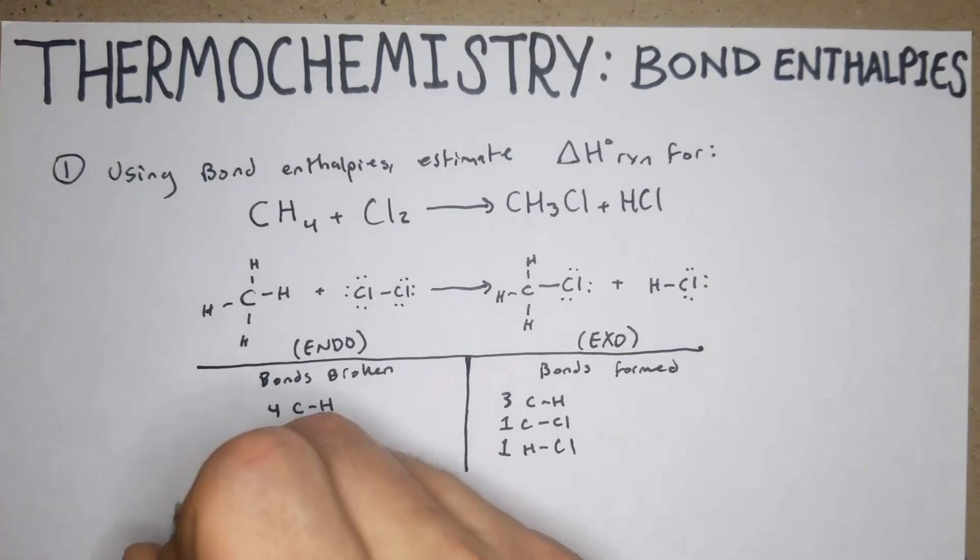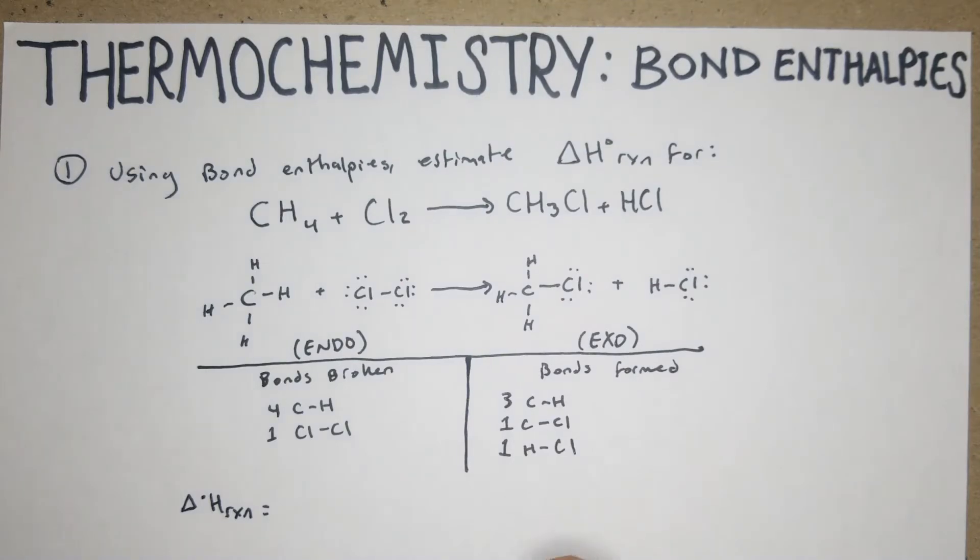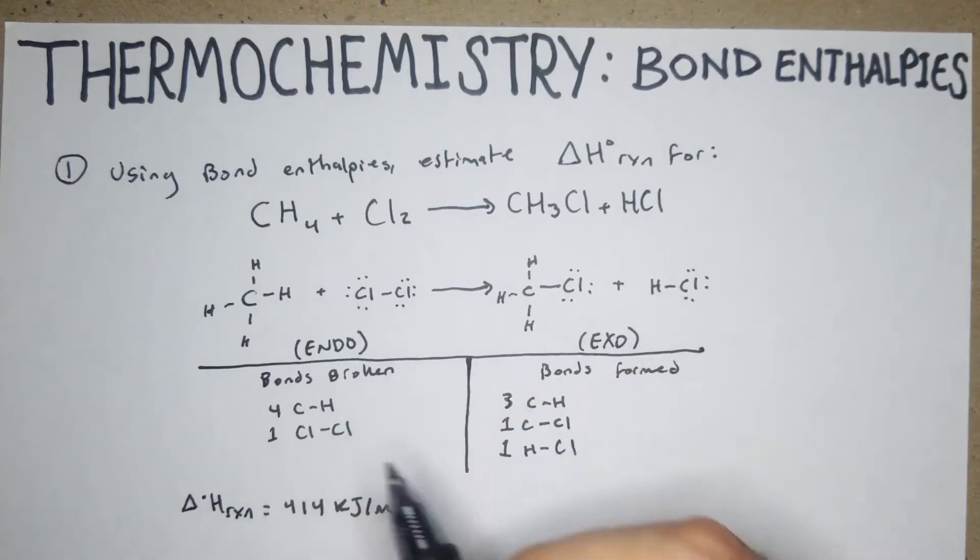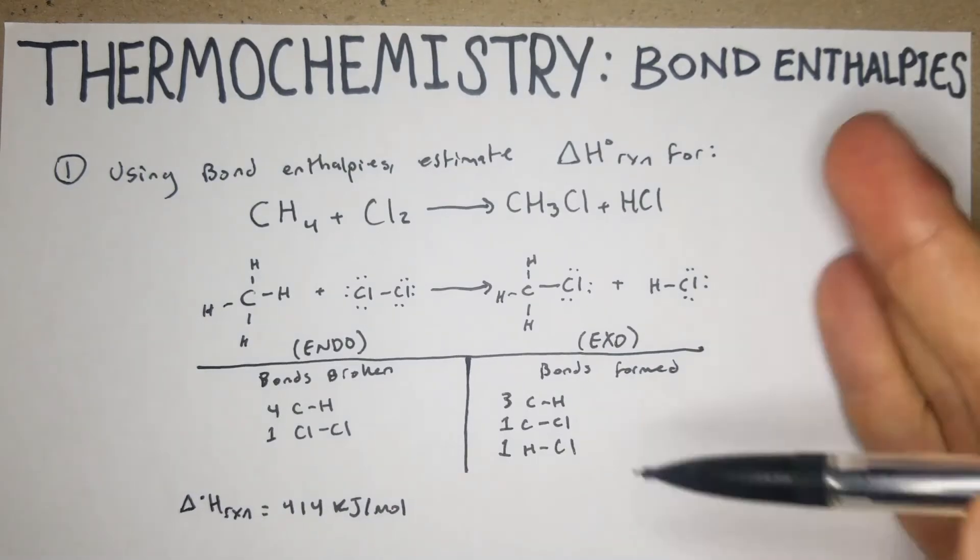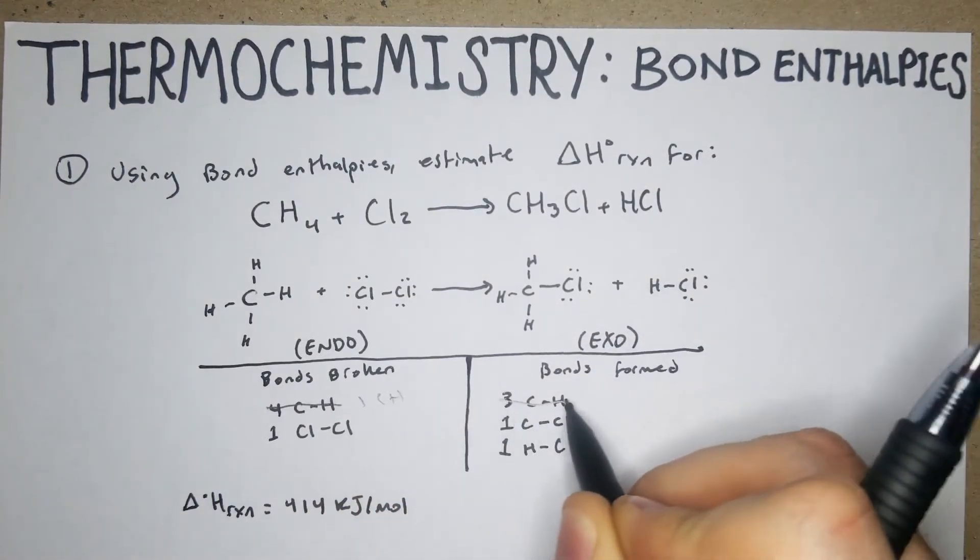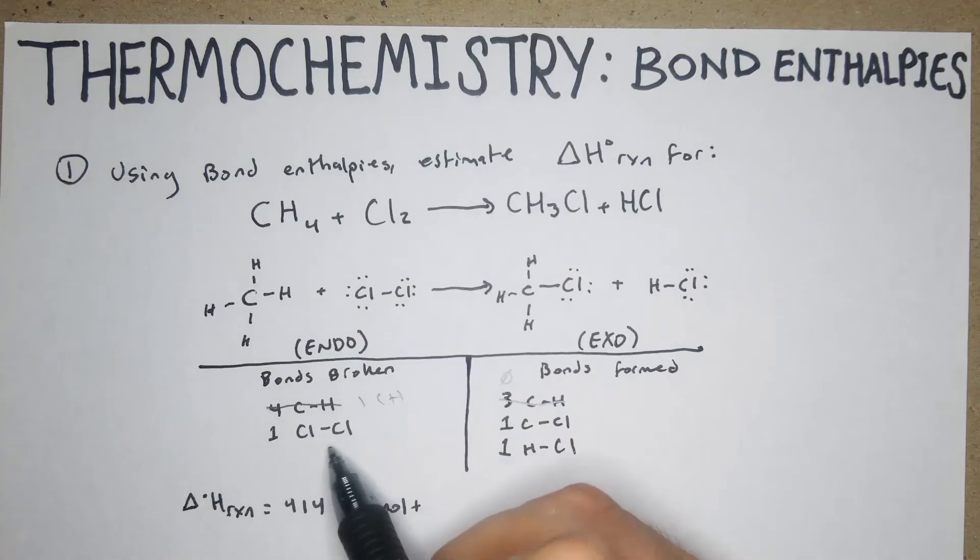You use those numbers to figure out how to calculate this, but essentially the enthalpy of the reaction is going to be equal to all the bonds broken minus all the bonds formed. So we're going to have four times 414 kJ per mole, which is just the CH bond. What we did is we took this four over here and the three over here and made that one CH.